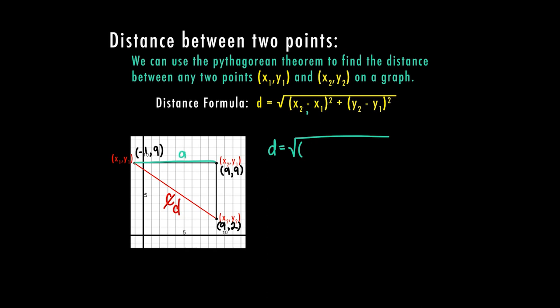So this is going to be your a, so your a distance is your x's. So in my first set of parentheses, my x₂ is 9 minus my x₁ is a -1, and all that's in parentheses squared, plus now my